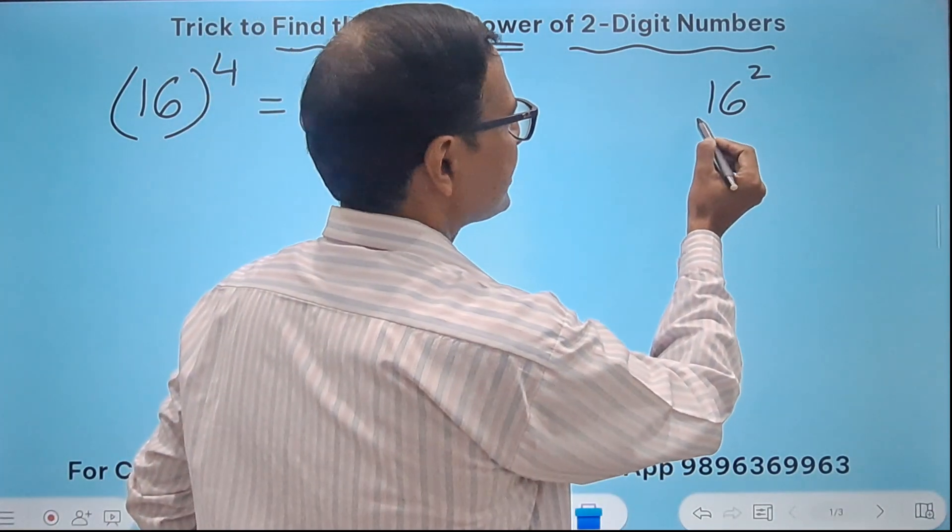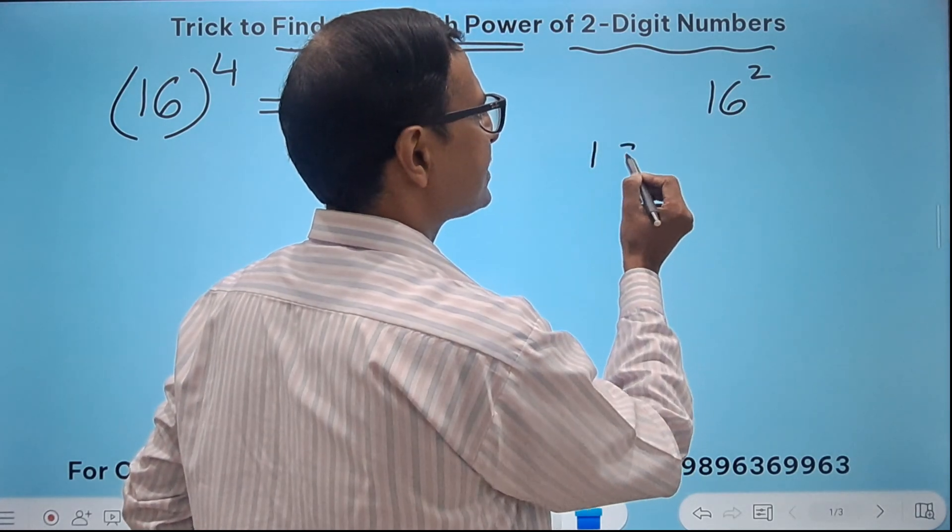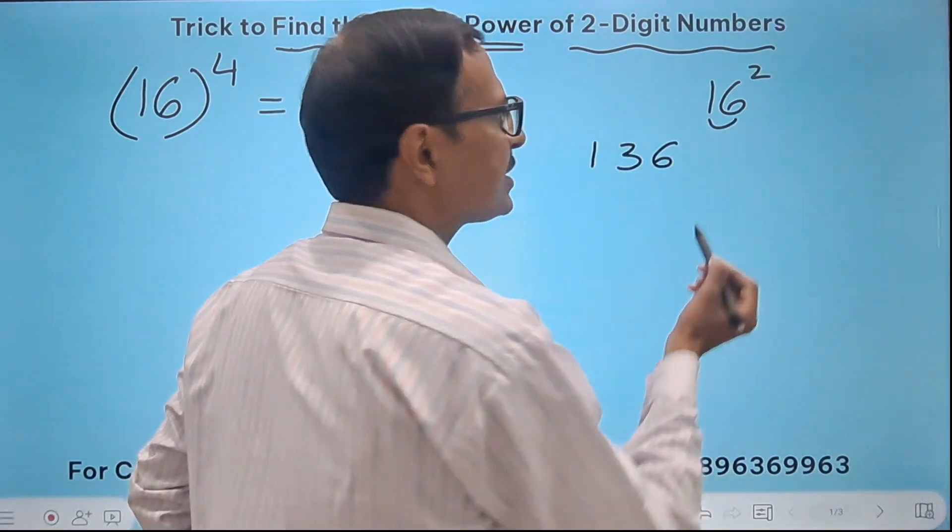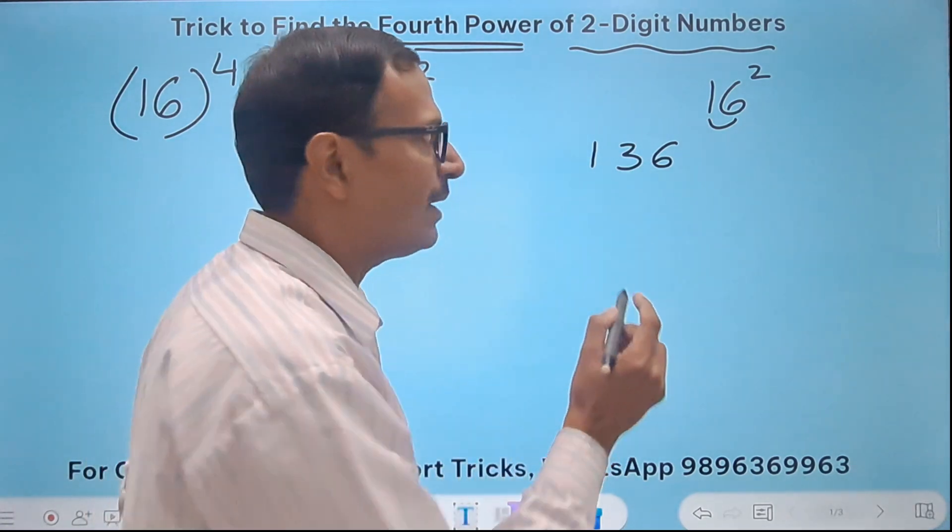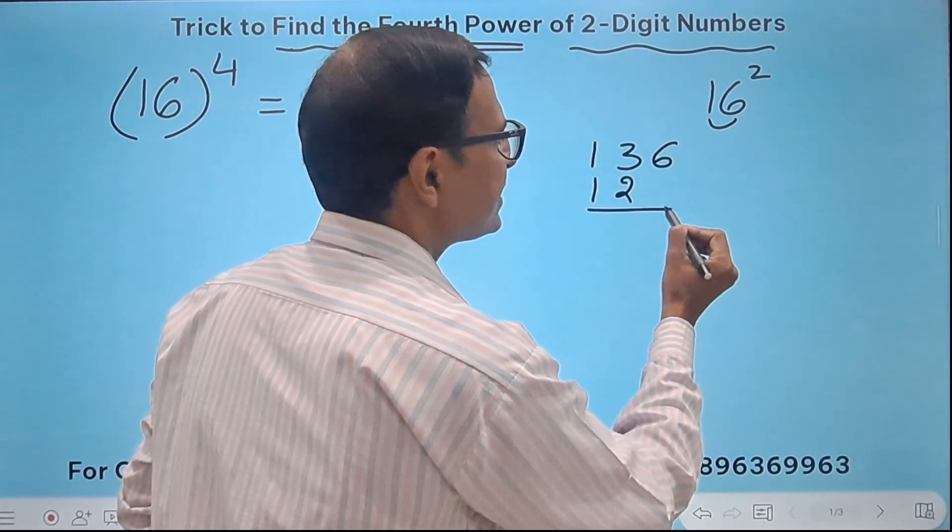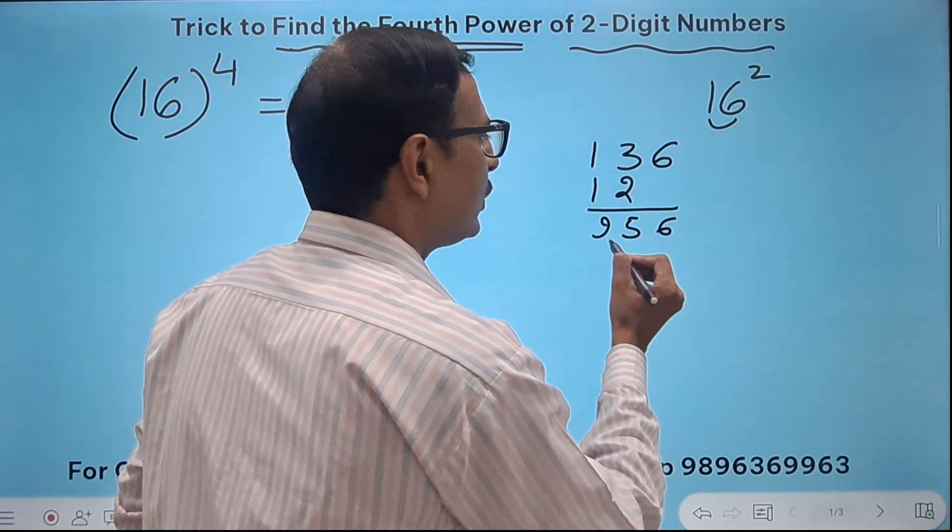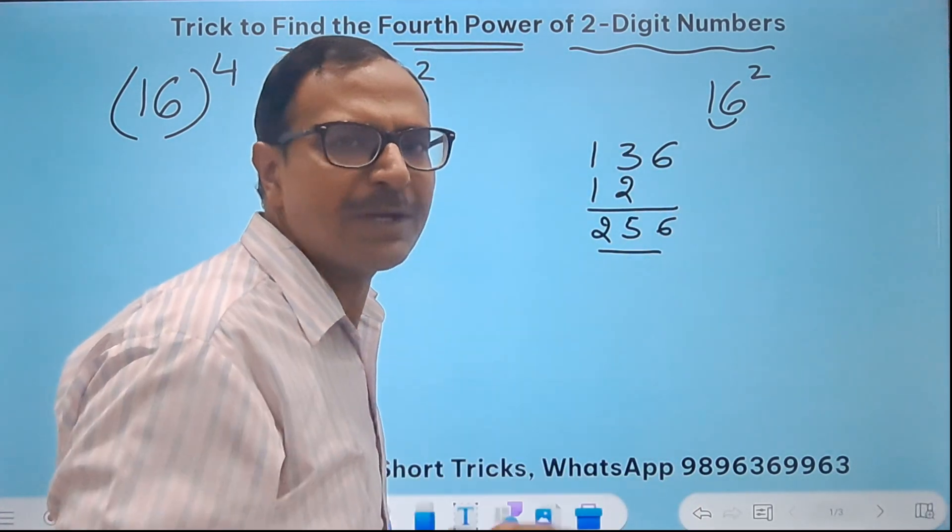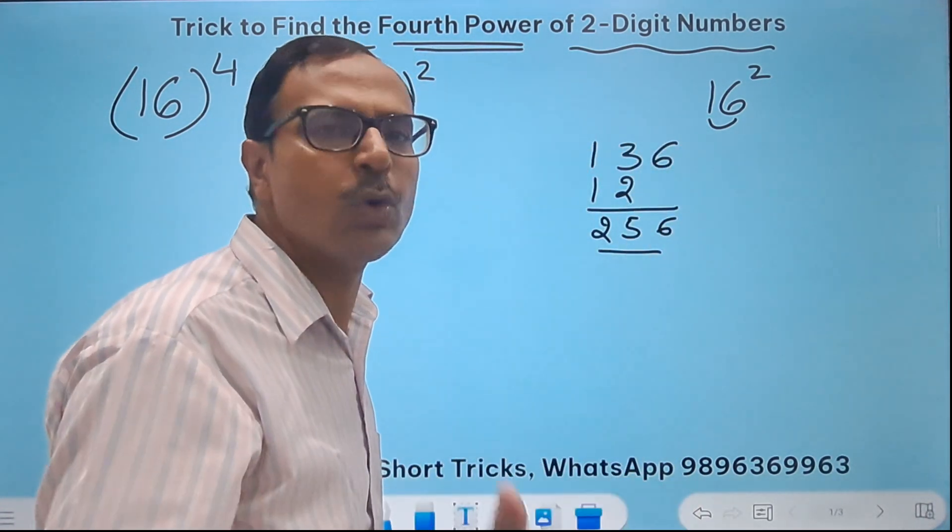So 1 squared is 1, 6 squared is 36, 1 into 6 is 6, the double is 12. So I'll write 12 here and just add vertically you get 256 as the square. Now this is one method which is the identity method a plus b whole square.